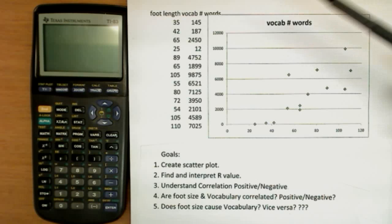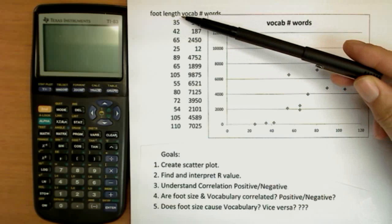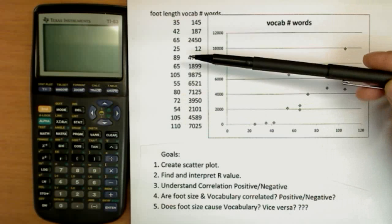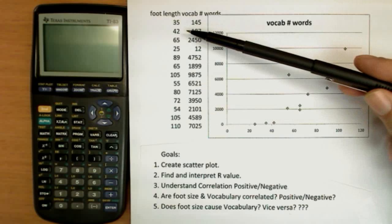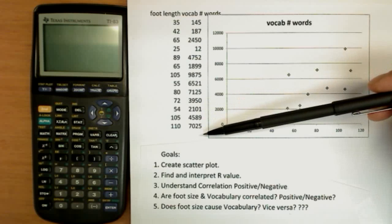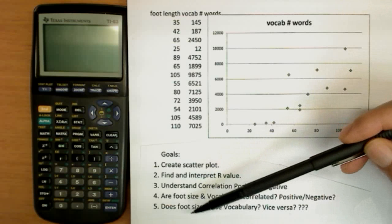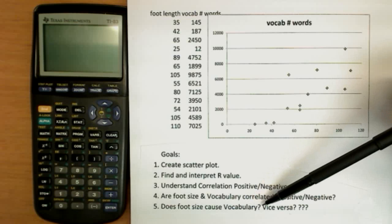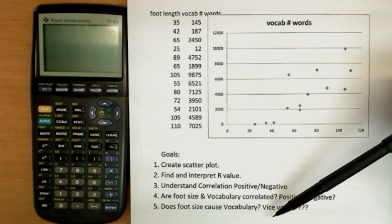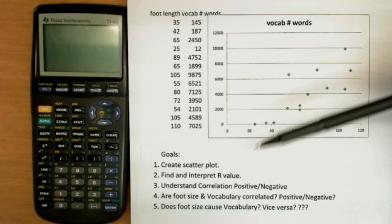Here's our particular data in this problem. I've given you a list of numbers that are the foot length of children and the number of vocabulary words the child knows. So we're going to see if the size of a child's feet correlates with his vocabulary size. And then we're going to ask a question: does foot size cause vocabulary or vice versa? Does knowing a lot of words make your feet big? Does having big feet help you to have a large vocabulary?